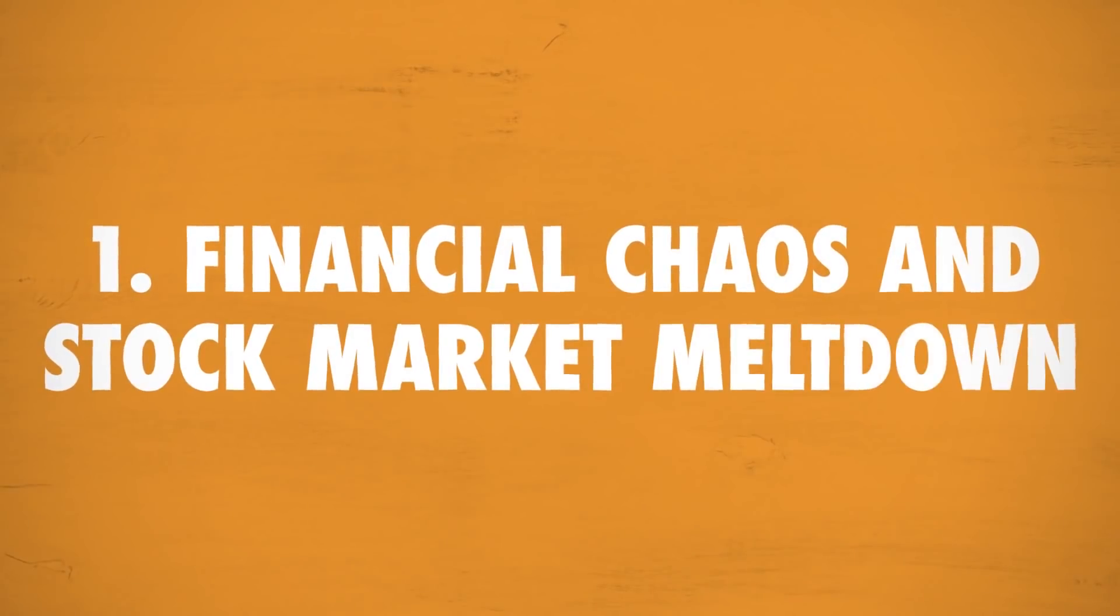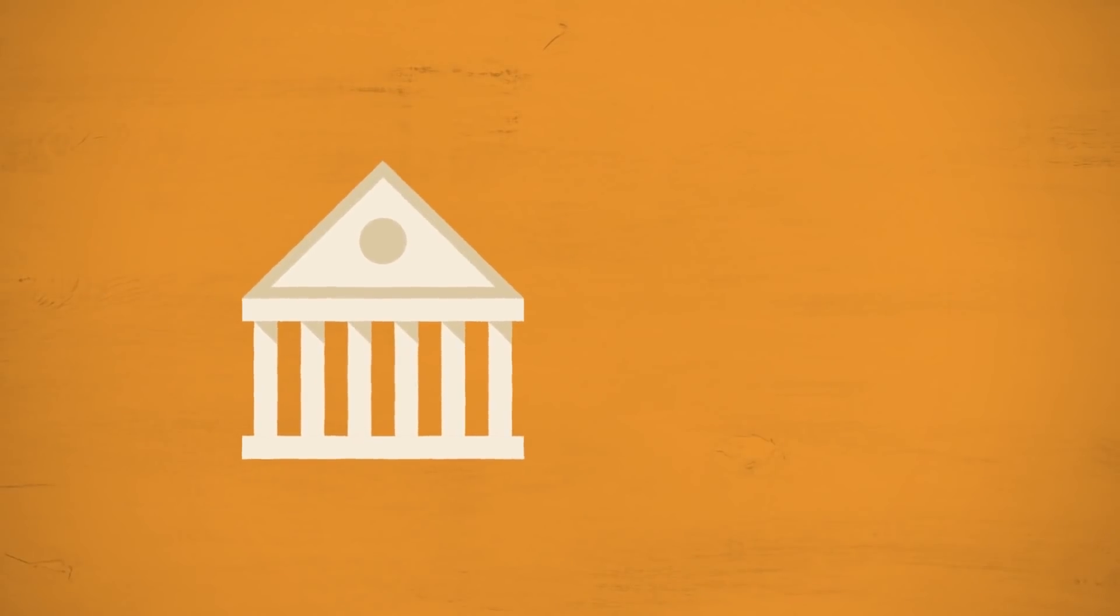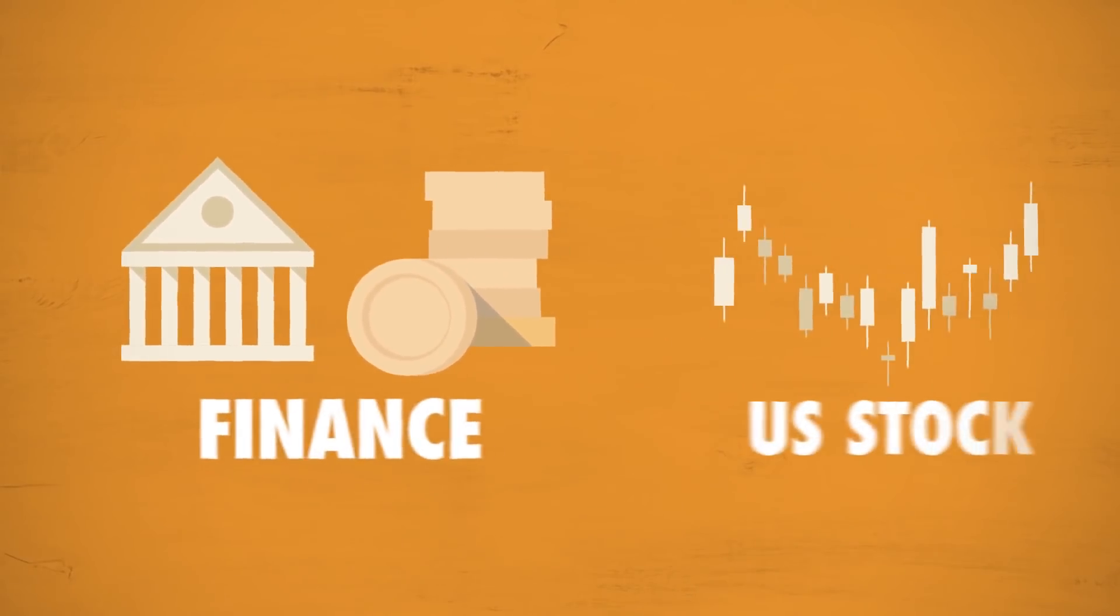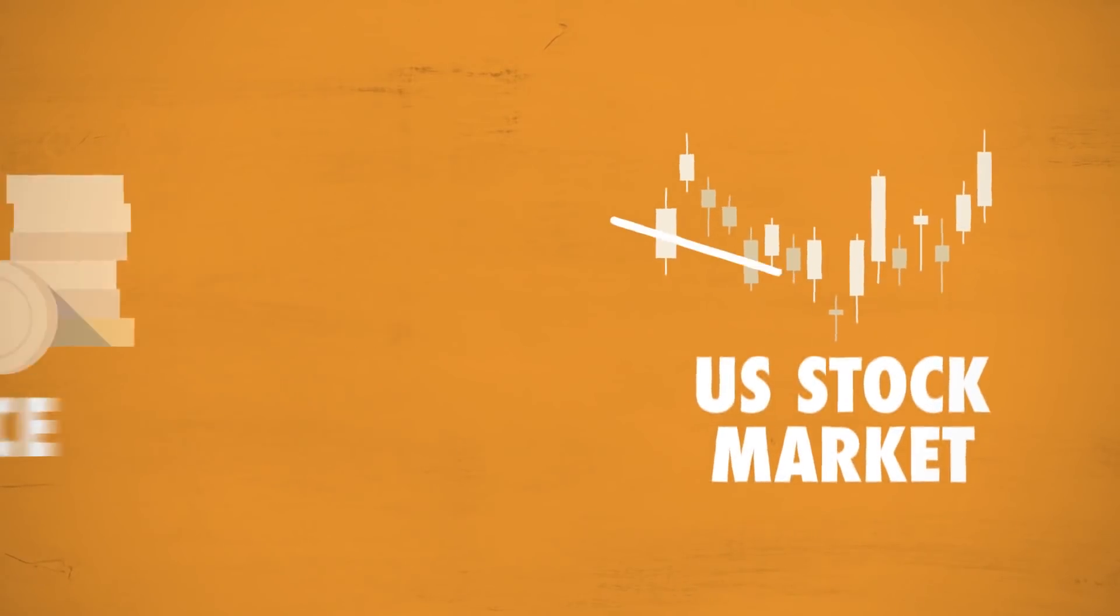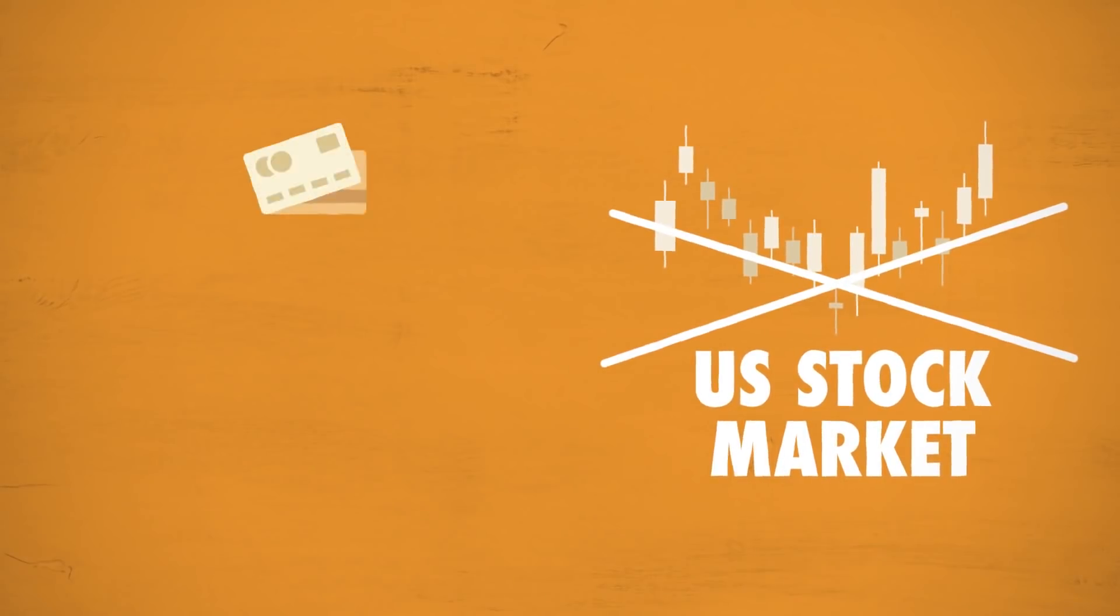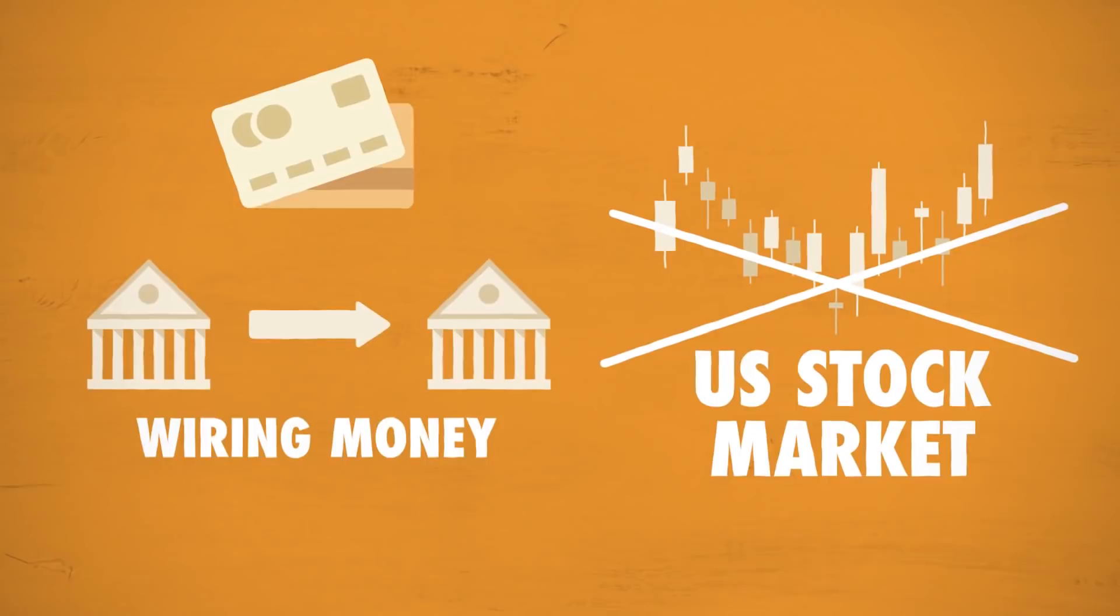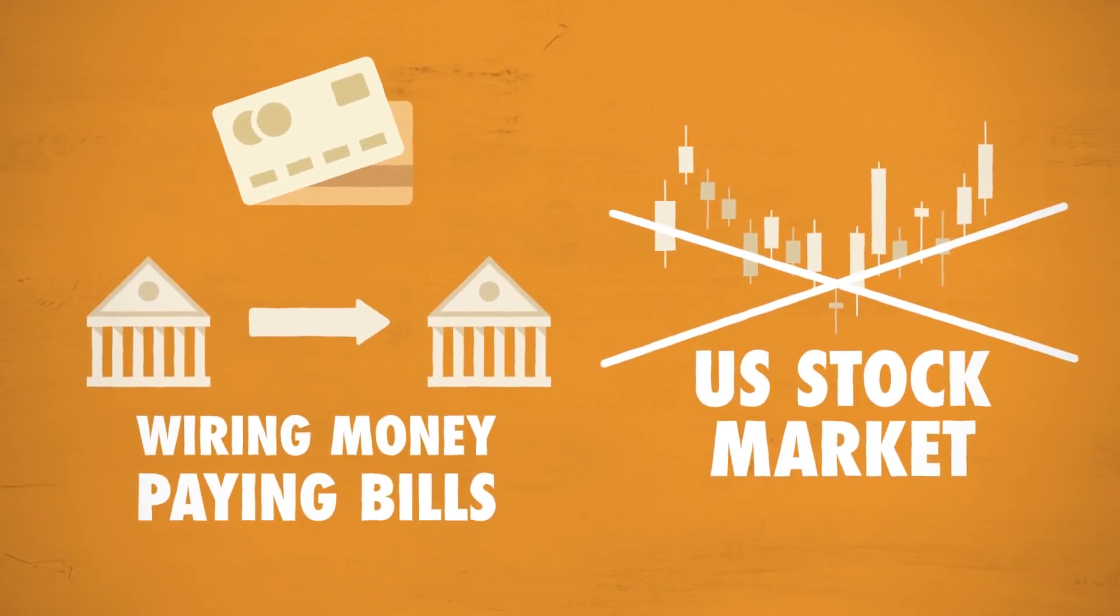1. Financial chaos and stock market meltdown. Obviously, one of the first institutions to be hit by an internet collapse would be finance, and the US stock market will be hit the hardest. The stock market would likely be closed, credit transactions for purchases would stop, bank to bank transactions such as wiring money or paying bills would come to a halt.